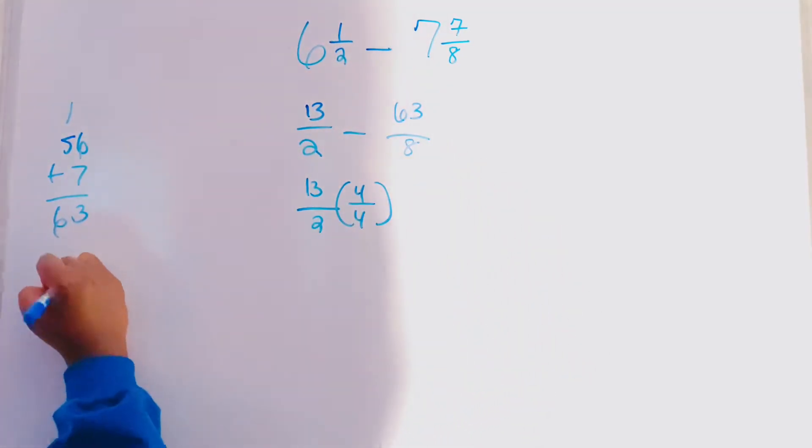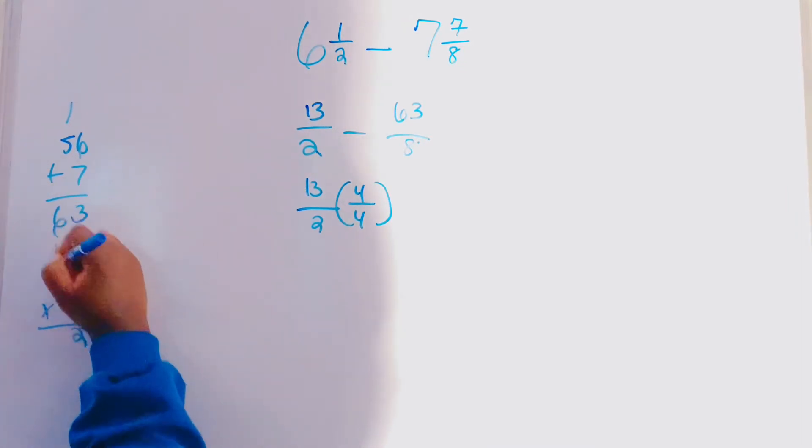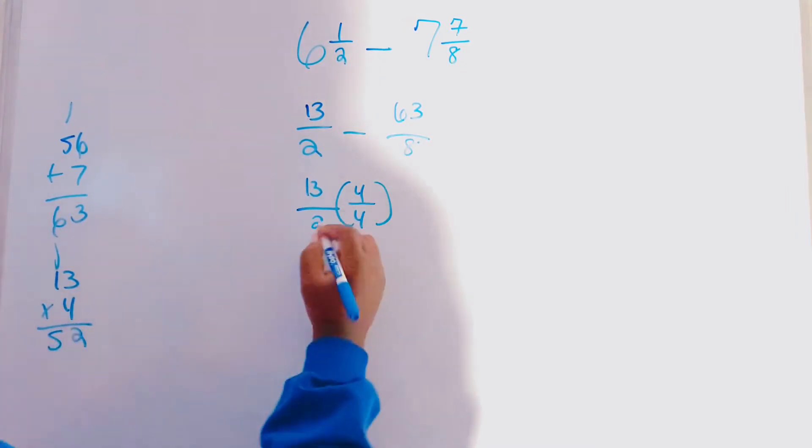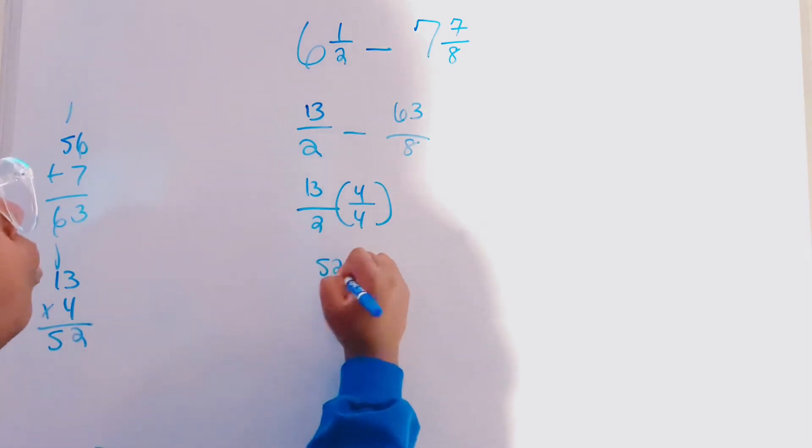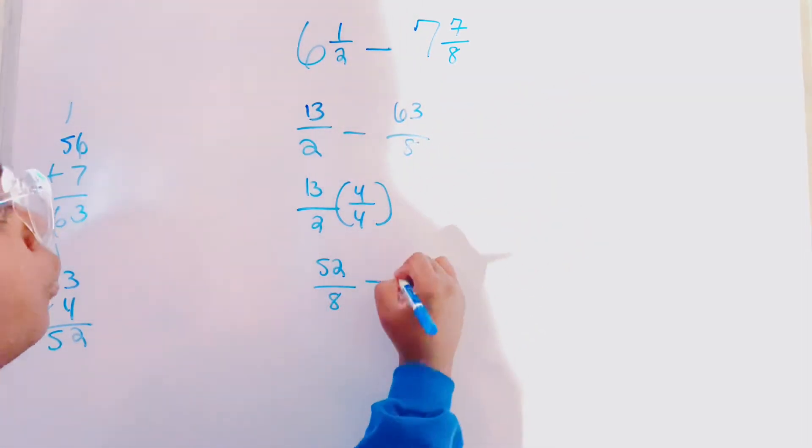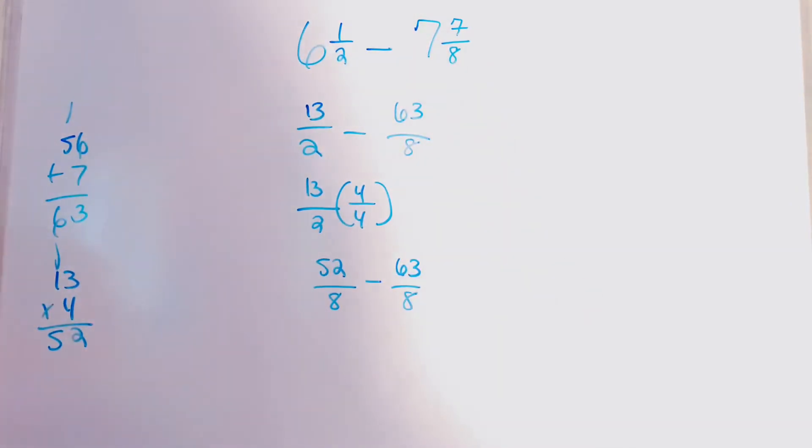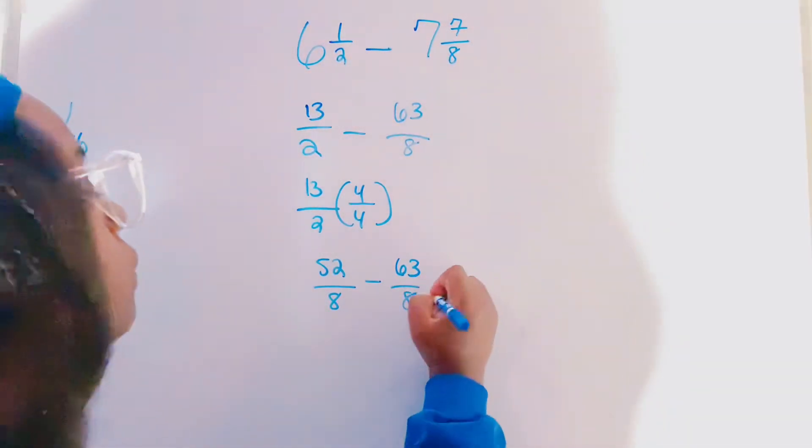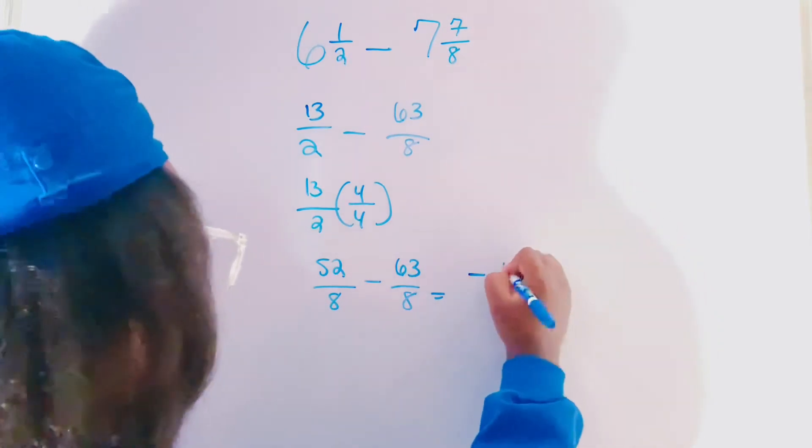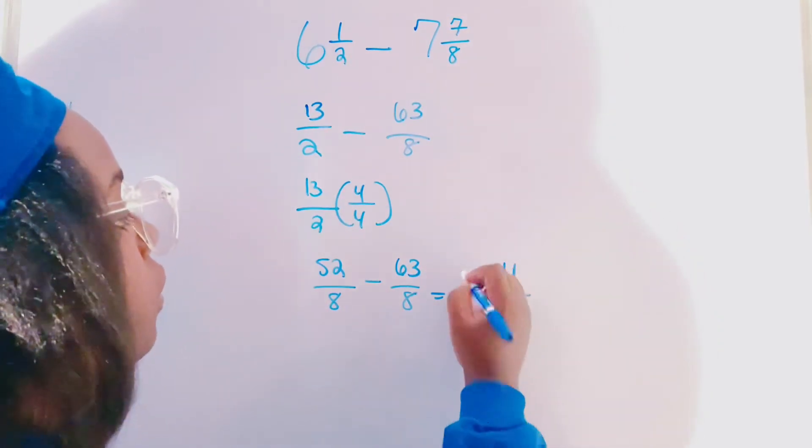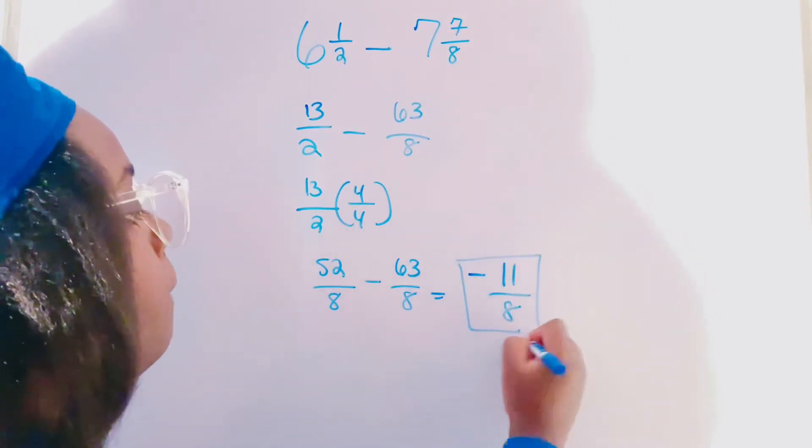That's going to give us, I just did this problem, I can't remember what it was. So, it's going to give us 52. So, we're going to get 52 over 8 minus 63 over 8. Now, we can subtract this. So, 52 from 63 is going to give us negative 11.